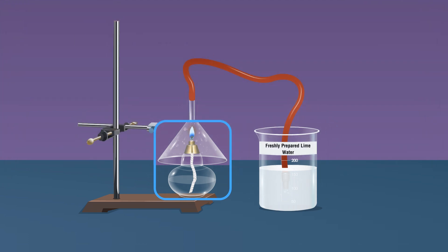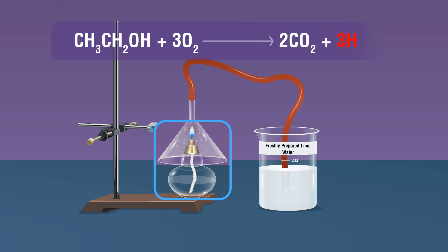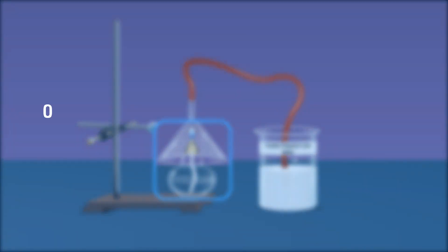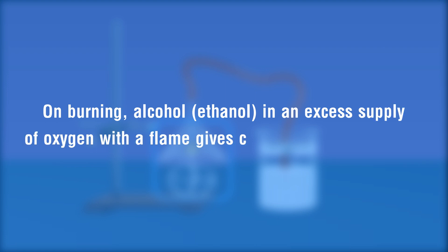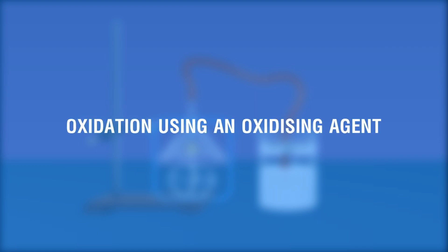CH3CH2OH + 3O2 gives 2CO2 + 3H2O. On burning alcohol ethanol in an excess supply of oxygen with a flame gives carbon dioxide and water. Oxidation using an oxidizing agent.